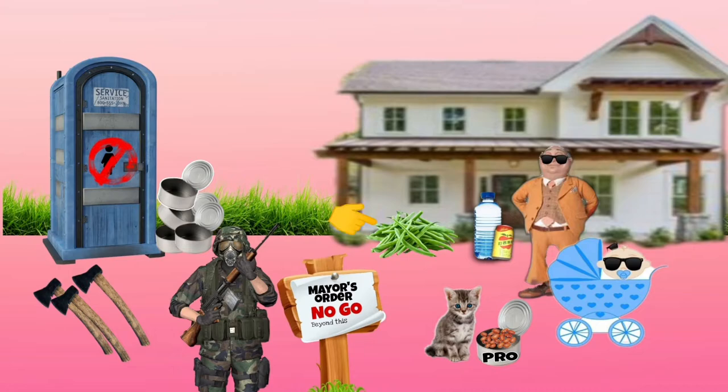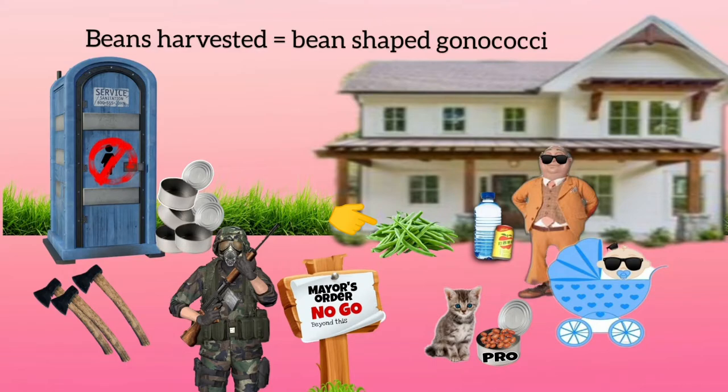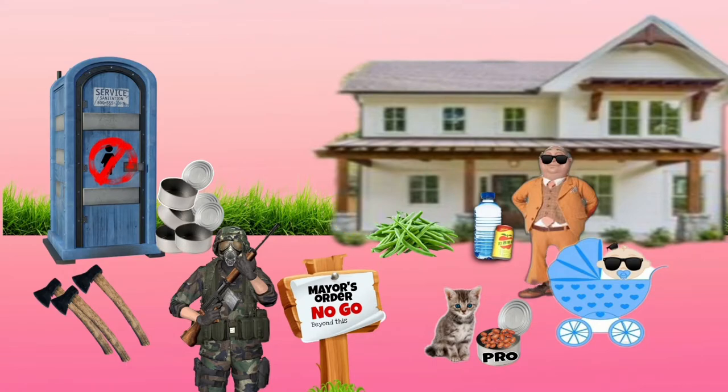Since red soil is good for the growth of green beans, you can see beans have been harvested here too. The beans will remind you that gonococci is bean-shaped. The mayor also has a cat, which will remind you that it is a catalase-positive organism.